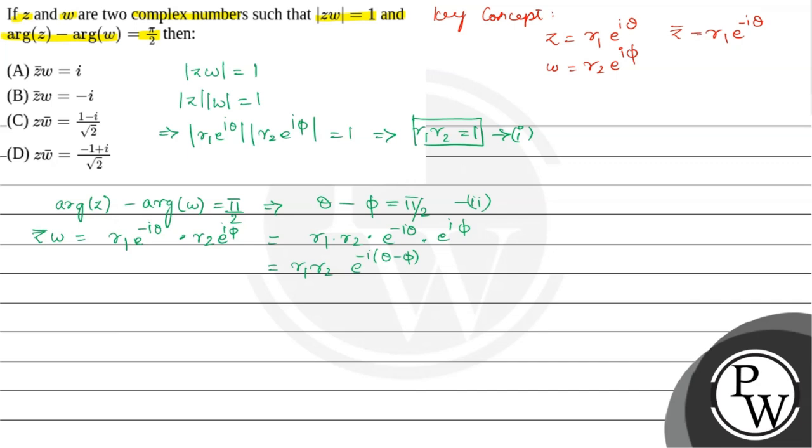R1 R2 is 1, so Z bar into W equals e power minus i times theta minus phi, which equals cos phi by 2 minus i sin phi by 2.